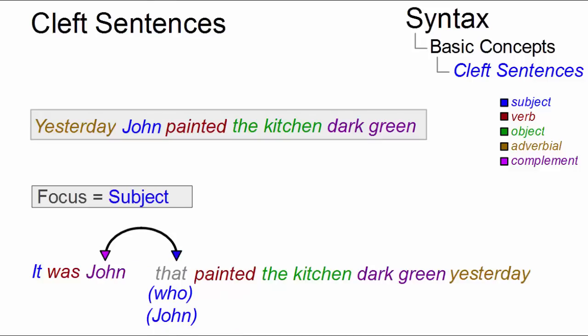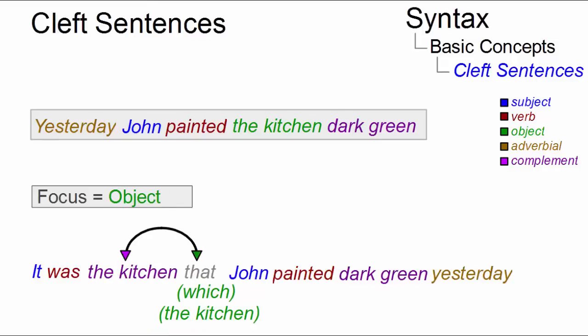In 'It was John who painted the kitchen dark green', the subject is in the focus and becomes the complement of 'it'. If the focus is on the object, we get 'It was the kitchen that John painted dark green', and 'the kitchen' is our subject complement.